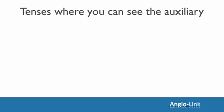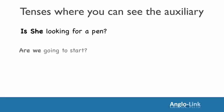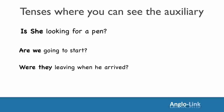Now let's look at some other verb tenses — first, tenses where you can see the auxiliary. It's easy enough: just move the auxiliary before the subject. 'She's looking for a pen.' 'Is' goes before the subject: Is she looking for a pen? 'We're going to start.' Are we going to start? 'They were leaving when he arrived.' Put 'were' before 'they.' Were they leaving when he arrived?